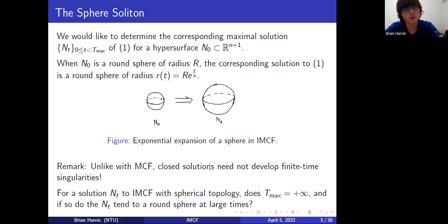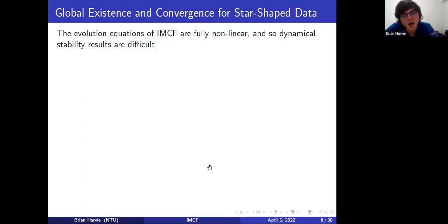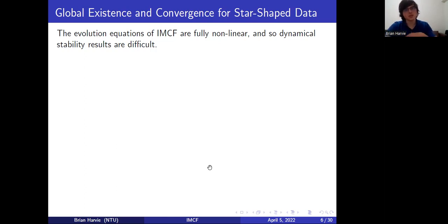So these are the questions we'll be focusing on: do finite time singularities happen, and if they don't and the initial surface has spherical topology, will it converge to a round sphere after rescaling at large times? The issue with approaching a problem like this is that all the evolution equations associated with inverse mean curvature flow are fully nonlinear, making dynamical stability results quite difficult. Unlike with mean curvature flow, you have a souped-up reaction term in your reaction-diffusion equations, but also ultra-fast diffusion — so maybe there's hope that something good is going on.